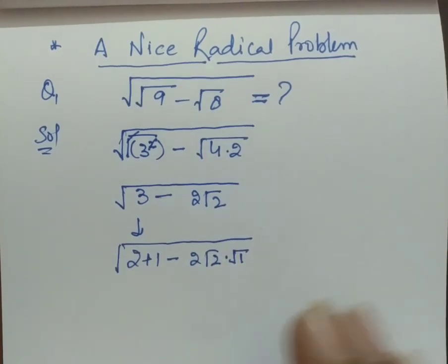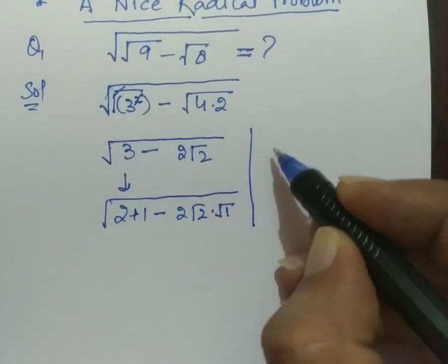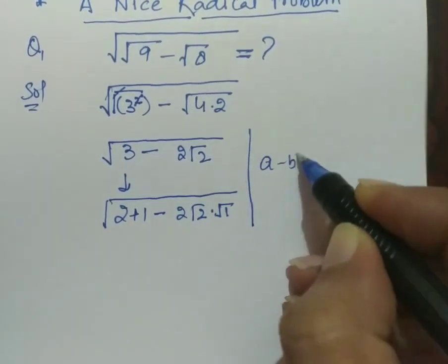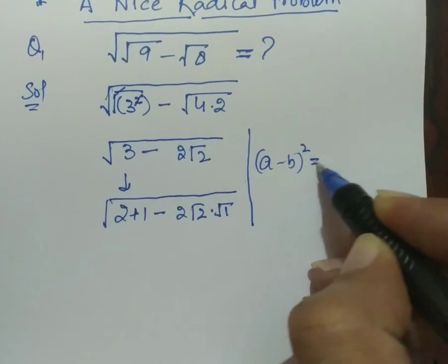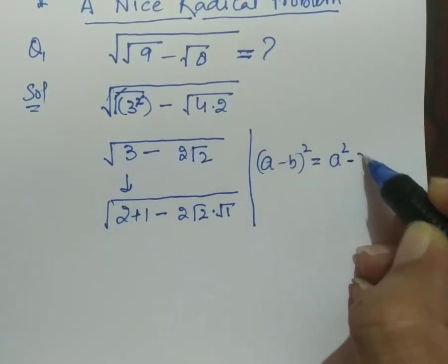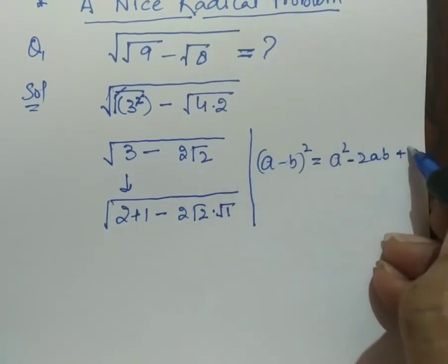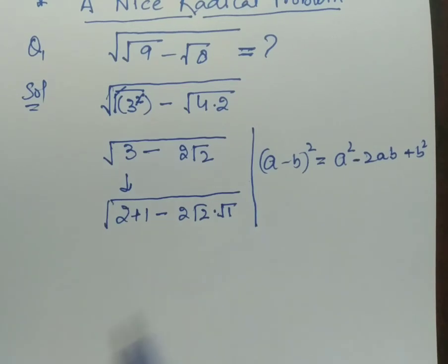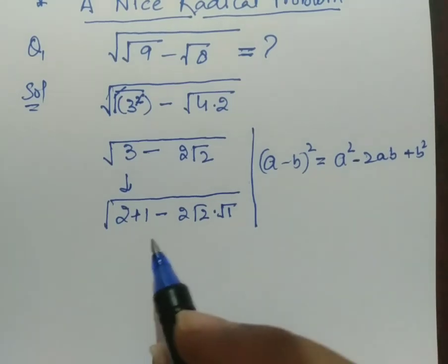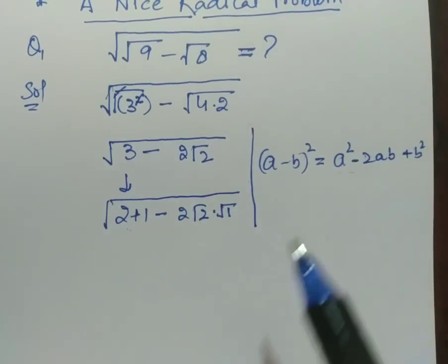Because I am going to compare with a minus b whole square equal to a square minus 2 times a b plus b square. So now we can write this in this form.